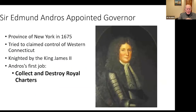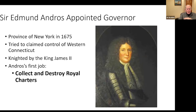Who is going to be the new governor? Edmund Andros is appointed governor of the Dominion — ten years later, back from England, he has been knighted by James II and is now Sir Edmund Andros. Remember, he had already tried to claim control of western Connecticut. His first job is to collect and destroy the charters.